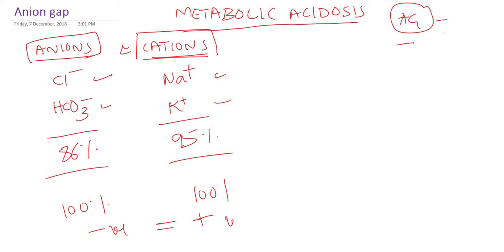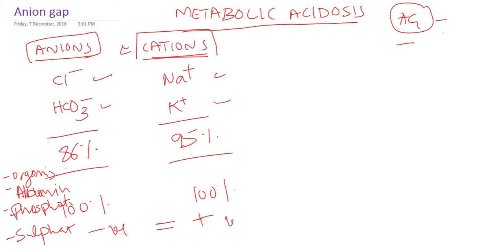What are the remaining anions? There are many anions we are not measuring, like proteins with charged ions — we are not measuring phosphate, sulfate, organic acids. Albumin and other plasma proteins — all proteins are made up of amino acids which are charged, especially they have many negatively charged amino acids. So usually we do not measure these when we measure electrolytes.